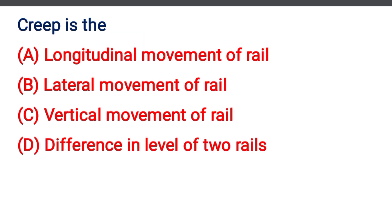Next question: Creep is the — Option A: Longitudinal movement of rail, Option B: Lateral movement of rail, Option C: Vertical movement of rail, Option D: Difference in level of two rails. The correct answer is Option A: Longitudinal movement of rail.